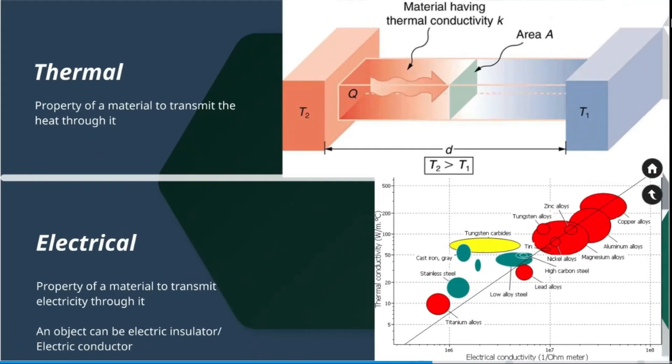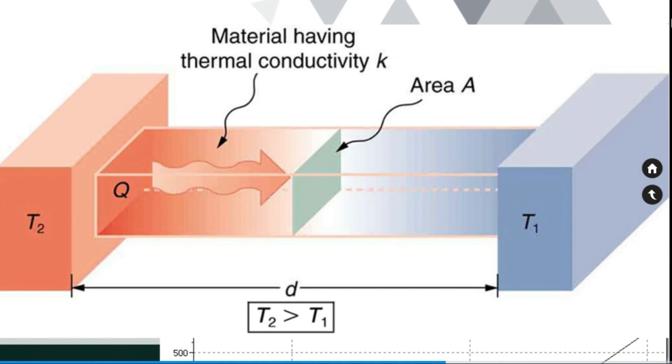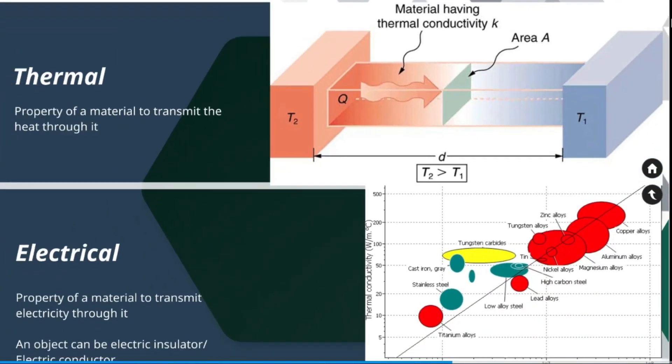Conductivity refers to the ability of a material to allow passage of electricity or heat. There are two types of conductivity. One is thermal conductivity and the other is electrical conductivity. Property of a material to transmit heat through is called thermal conductivity. This image shows the heat transformation from one area of the body to the other.